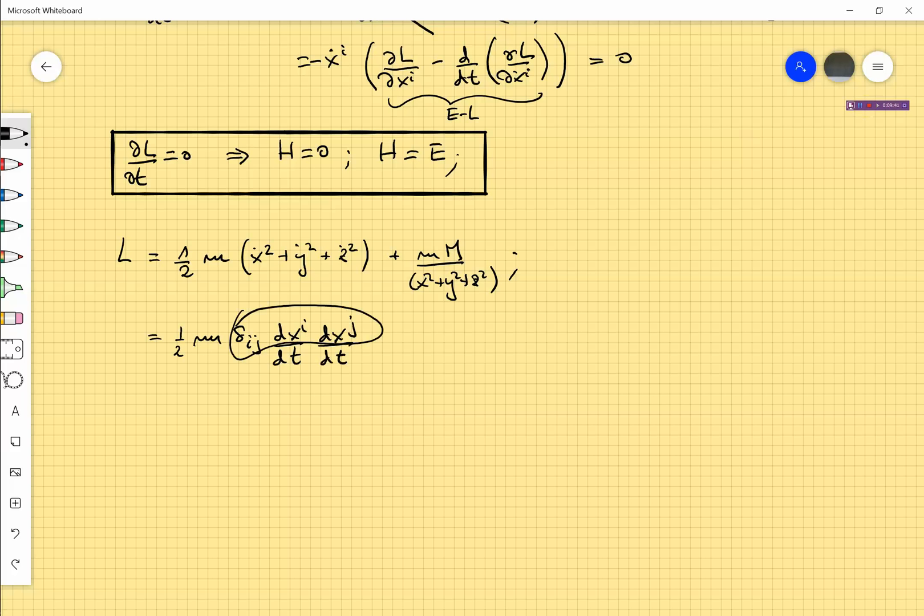When you switch from x1, x2, x3 Cartesian to r, theta and phi, you are going to get here the metric that we found the other day, the spherically symmetric metric. Let me do it, just profit from that result.